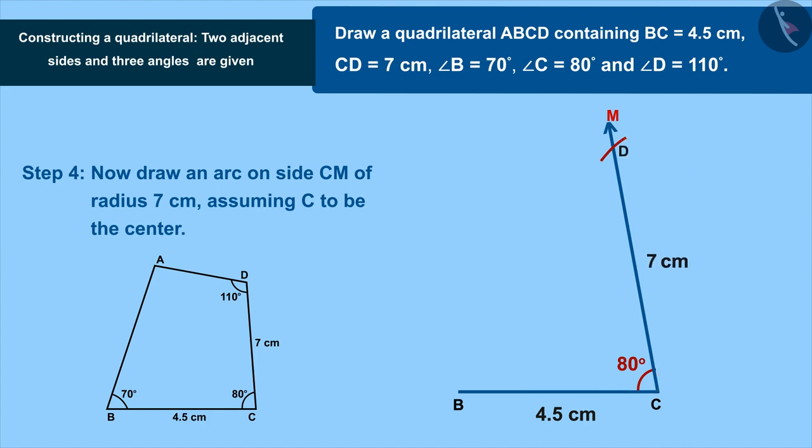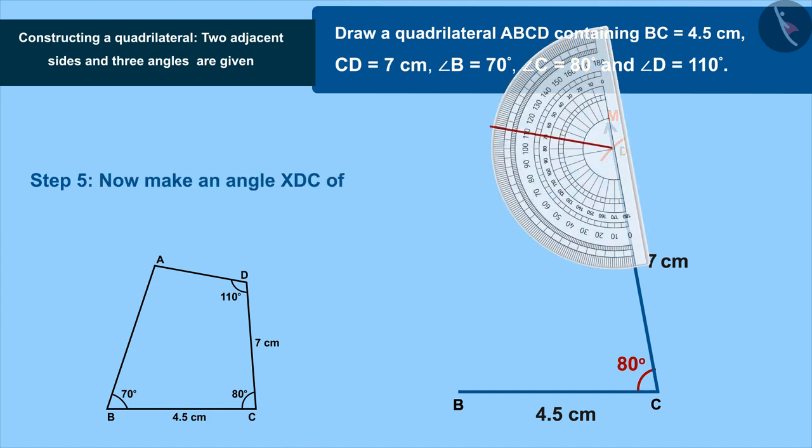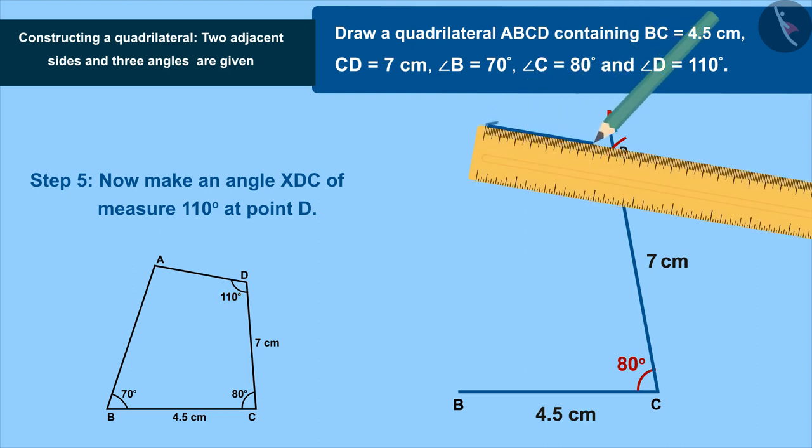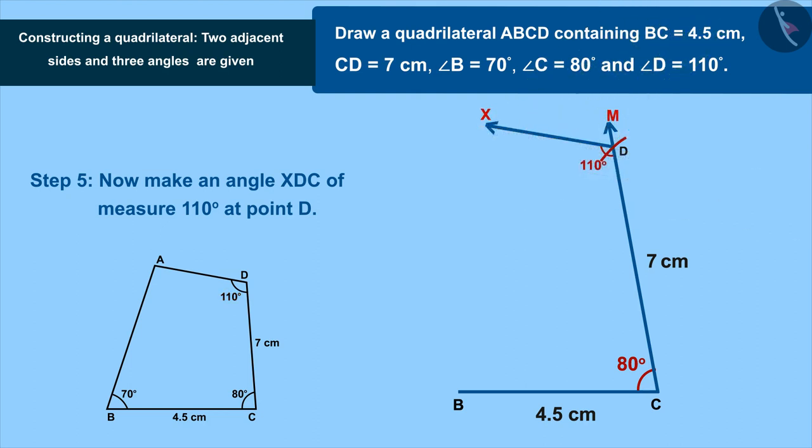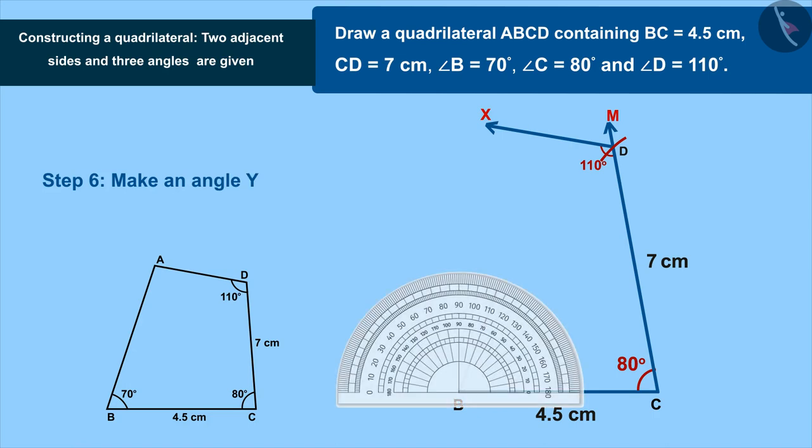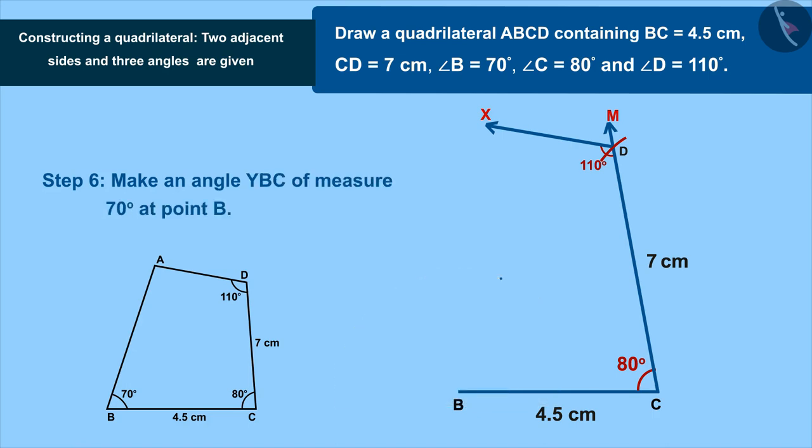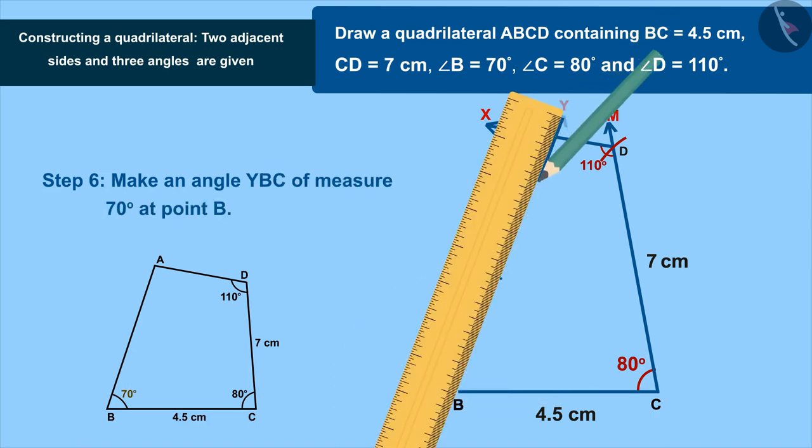Now make an angle XDC of measure 110 degrees at point D. Can you think of the next step? Well done. Make an angle YBC of measure 70 degrees at point B.